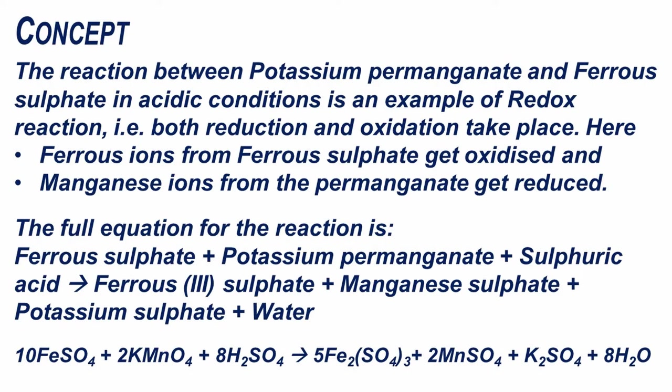The reaction between potassium permanganate and ferrous sulfate in acidic conditions is an example of a redox reaction — that is, both reduction and oxidation take place. Here, ferrous ions from ferrous sulfate get oxidized and manganese ions from the permanganate get reduced. The full balanced equation is: 10 FeSO₄ + 2 KMnO₄ + 8 H₂SO₄ → 5 Fe₂(SO₄)₃ + 2 MnSO₄ + K₂SO₄ + 8 H₂O.